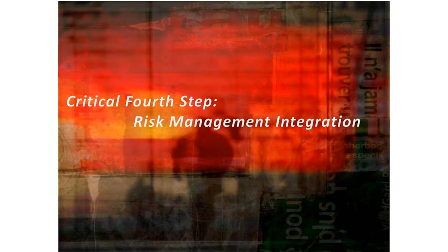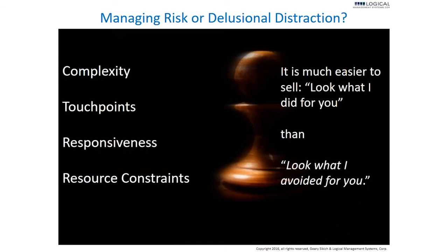The fourth step is risk management integration, which is critical when looking at CSR. We make a lot of commitments and therefore have a lot of risk exposure. You have a tremendous amount of complexity, a number of touch points along your value chain — customers, suppliers, vendors, stakeholders, interested parties. You have to have responsiveness built into your organization, and you have to deal with resource constraints — monetary, people, and talent.